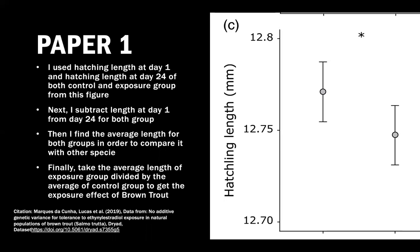On the right side is the figure I pulled from paper 1. I used the hatching length at day 1 and hatching length at day 24 for both the control and exposure groups. To compare the length between the two species, I subtracted the length at day 1 from day 24 for both groups, because that represents the actual length the species grew. Then, to find the exposure effect — since the original sizes of the two species are not the same — I calculated the average length for both groups and divided the average of the exposure group by the average of the control group.